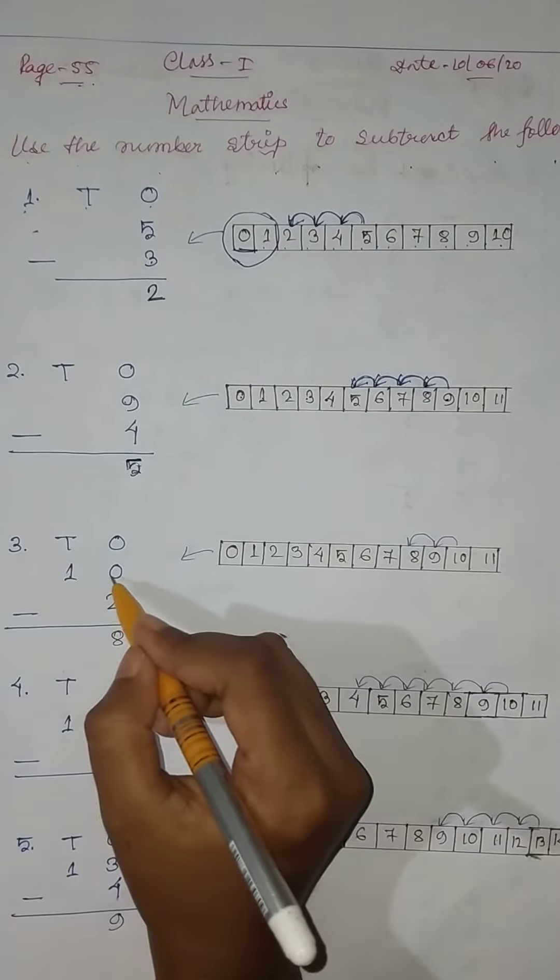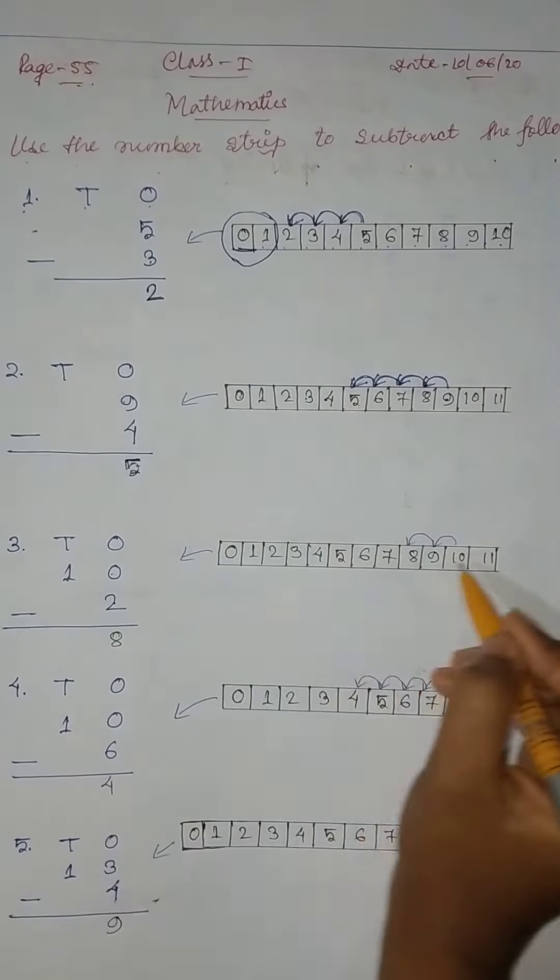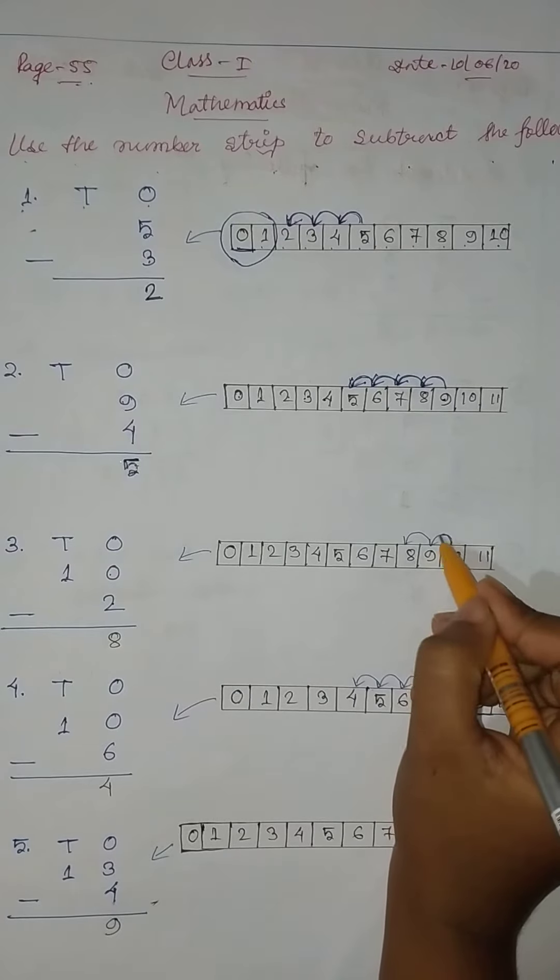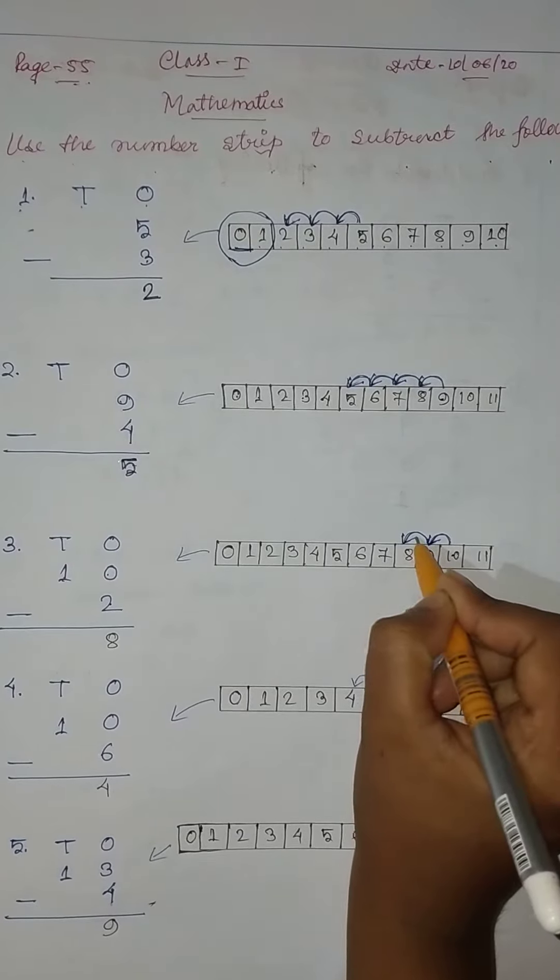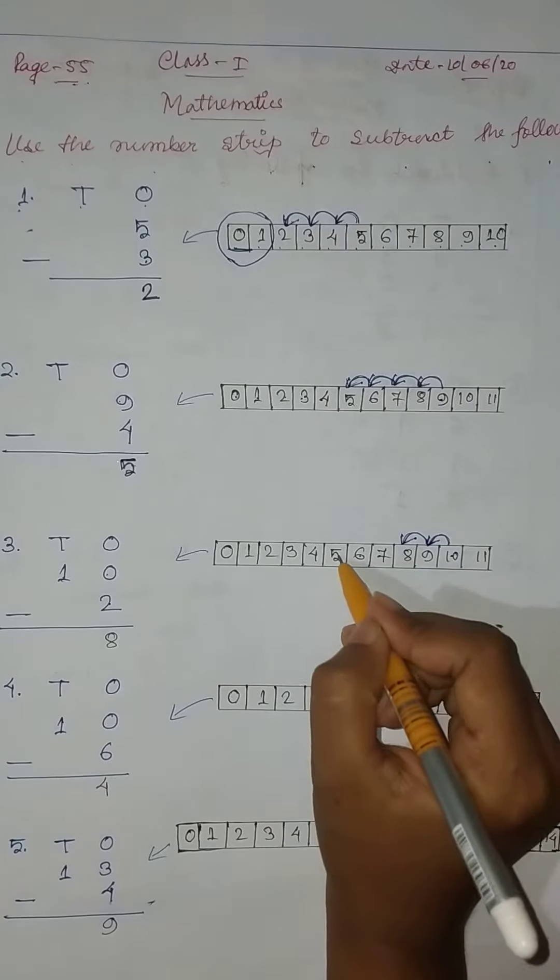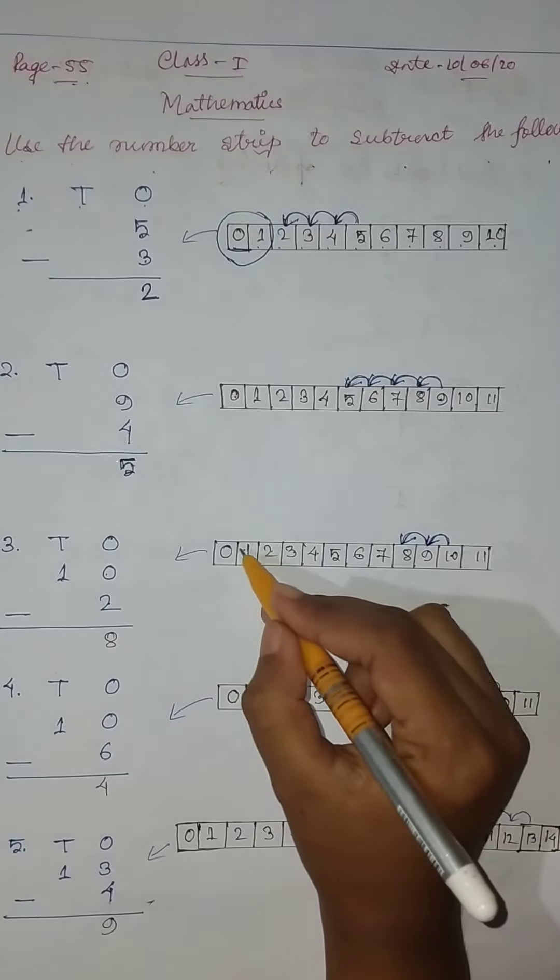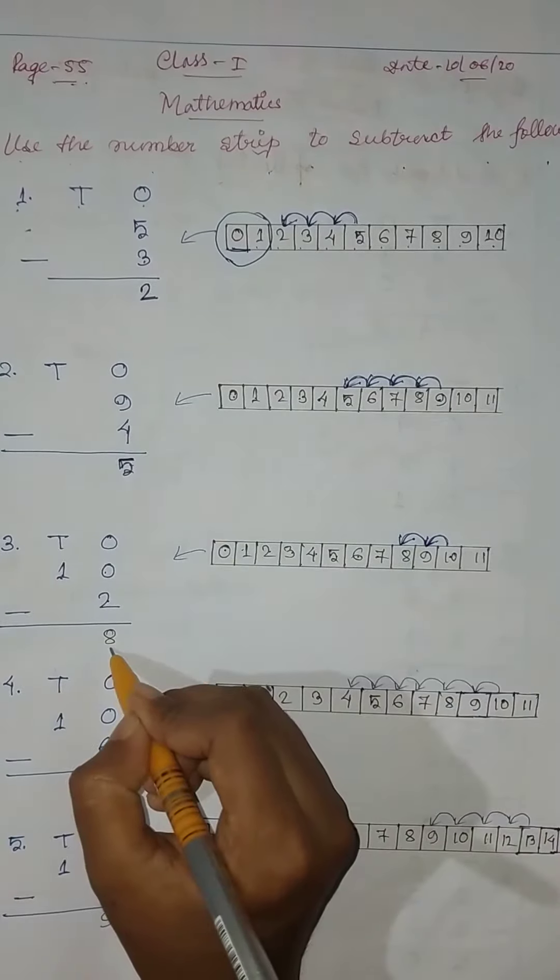Here, 10 minus 2. 10 minus 2. 1, 2. So here, left: 1, 2, 3, 4, 5, 6, 7, 8. So here, 8.